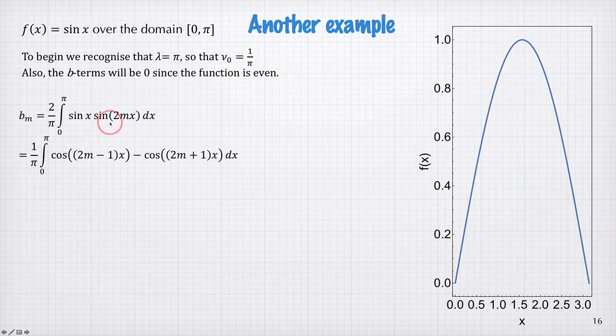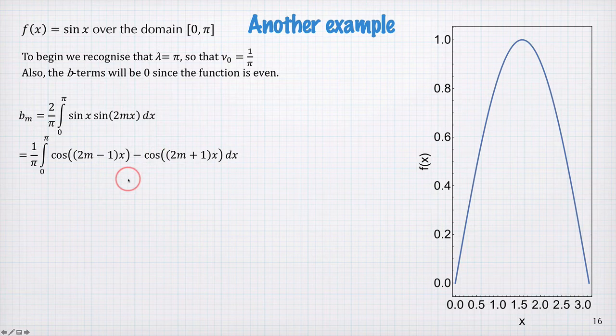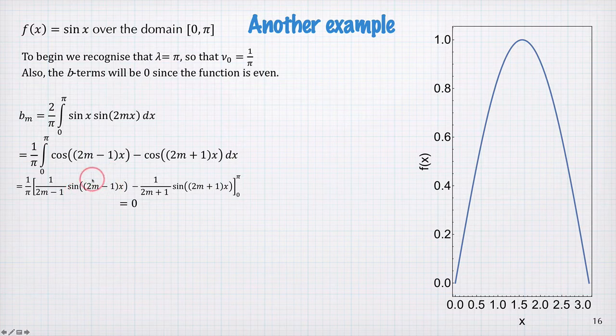We can expand this product of sin functions into a difference in cosine terms and integrate, and we get 0 because the sin of all these odd things here is going to be 0 at 0 and π.